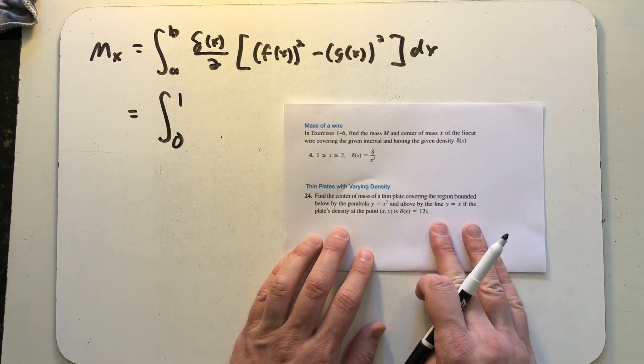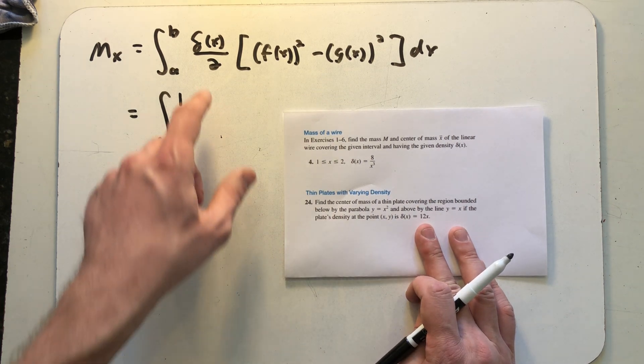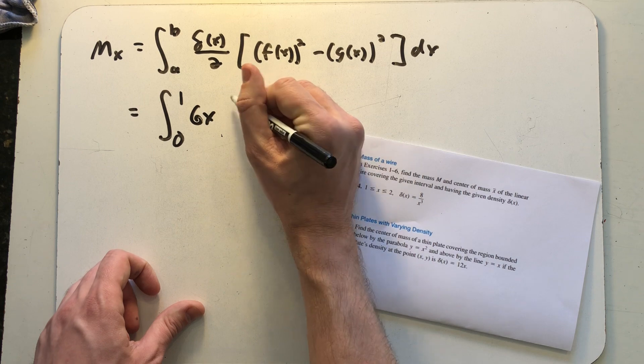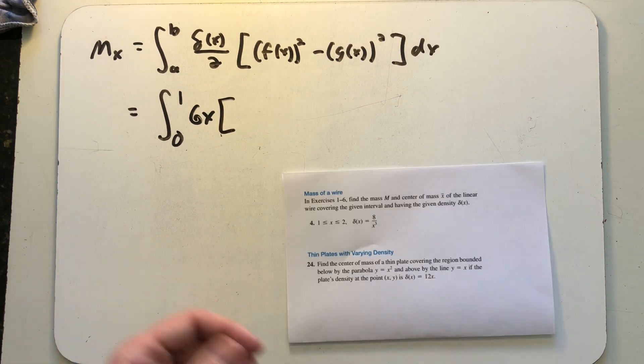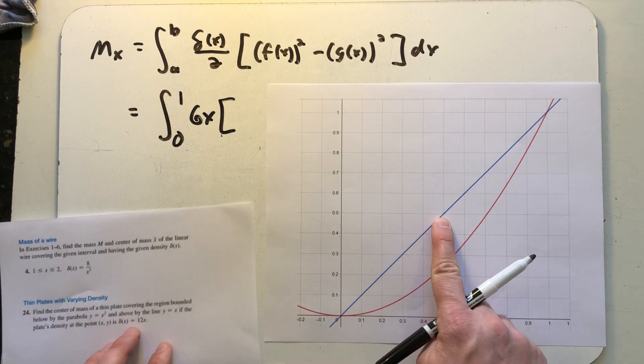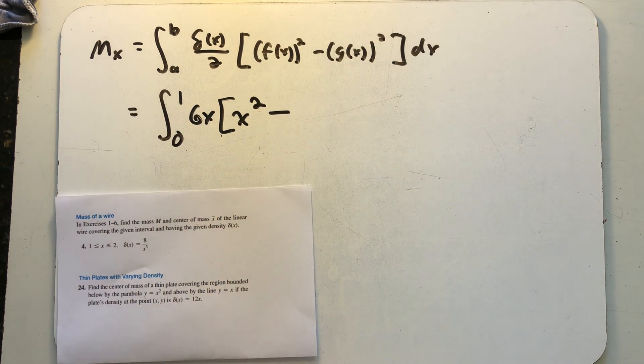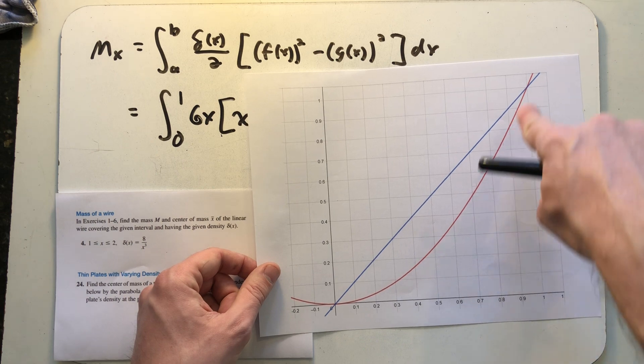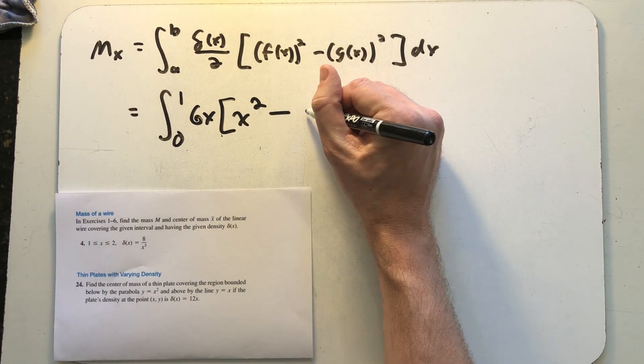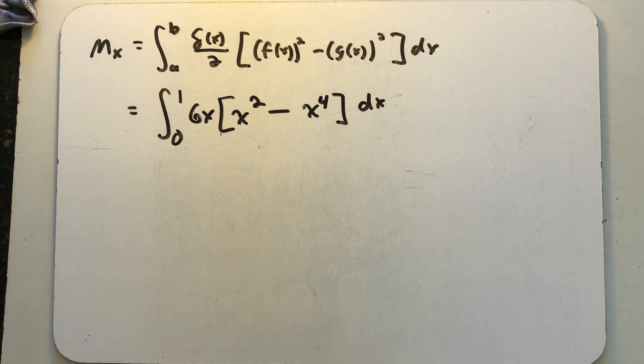In the original problem we're told the density function is 12x. So when I set up this integral 12x over 2 is 6x times f of x all squared. Well f of x here is going to be my top function which is just the line y equals x. So that's going to be x squared minus the bottom function squared. The bottom function y equals x squared squared is x to the fourth. And so this integral is the one I need to solve to find the moment about the x-axis.